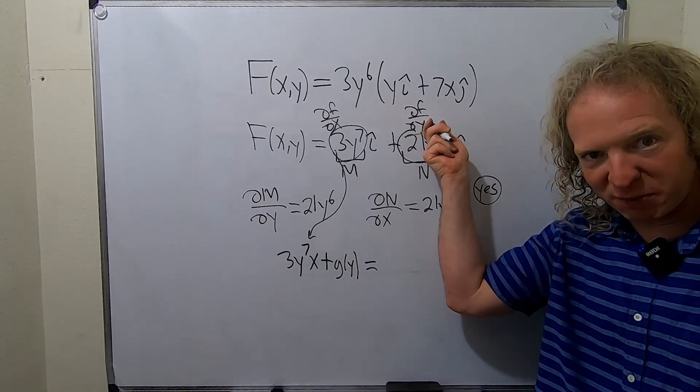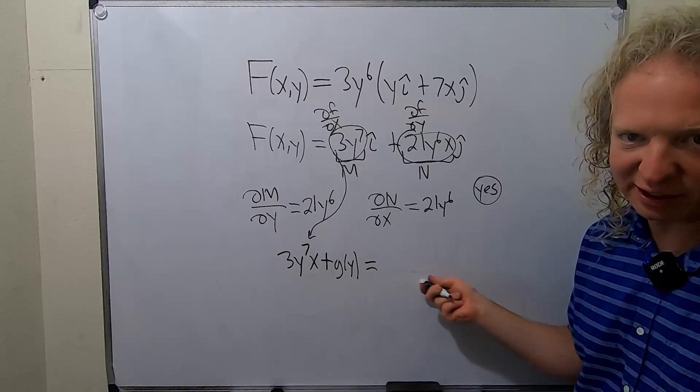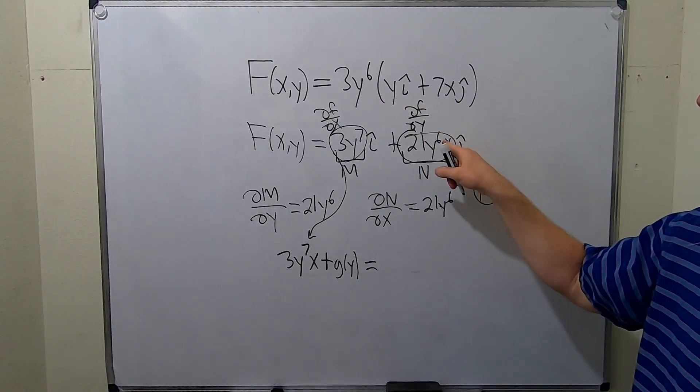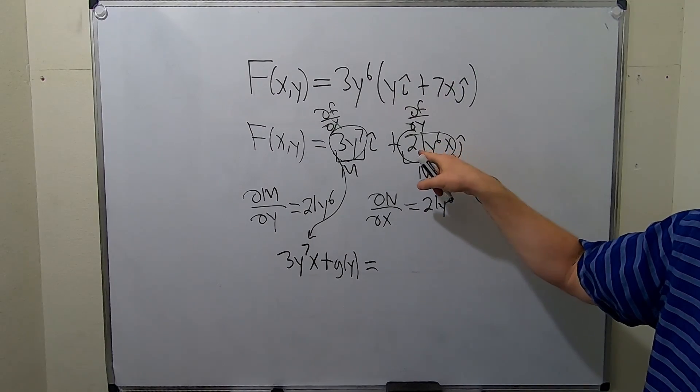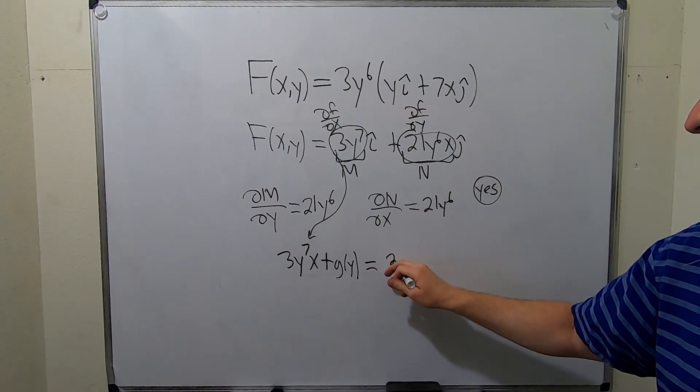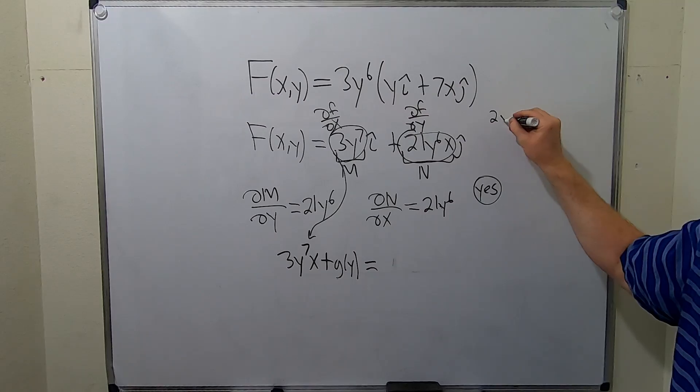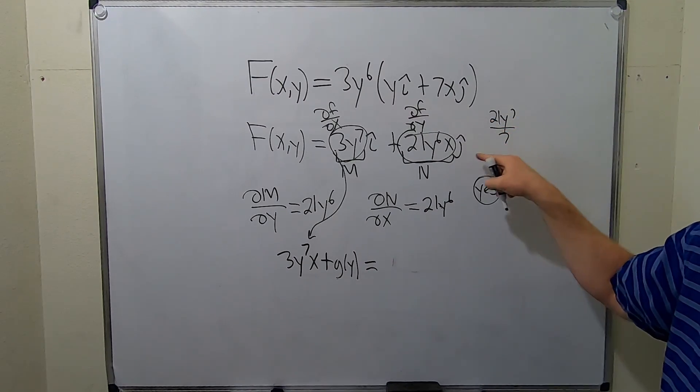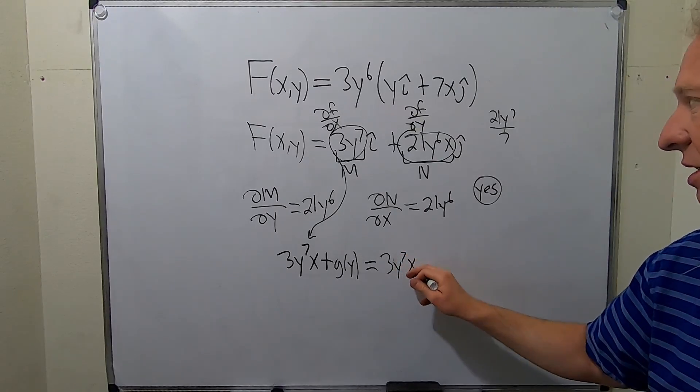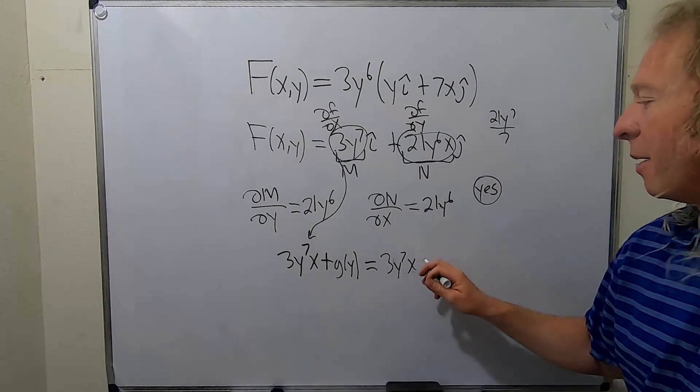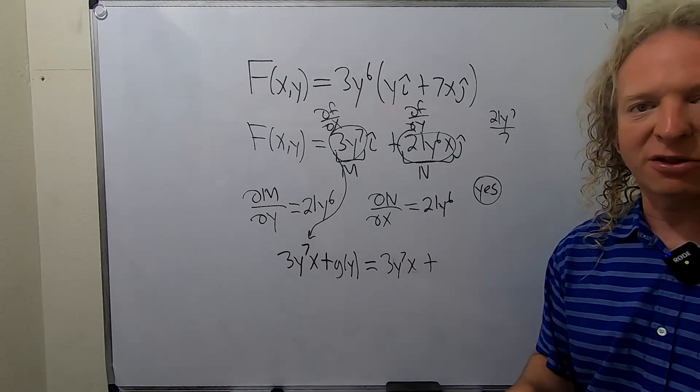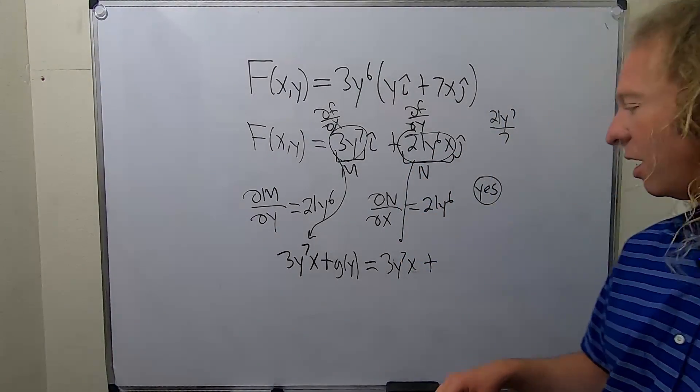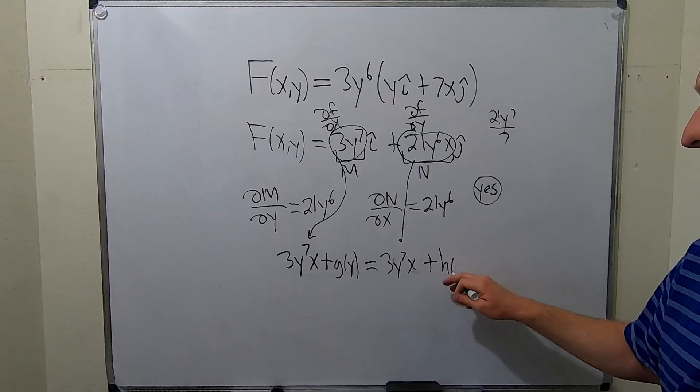But this is little f. So if we integrate this with respect to y, we're also going to get little f. So we'll integrate this with respect to y. Using the power rule, you're going to get 21y^7 over 7, which is 3y^7. So 3y^7 x—the x is a constant, so it hangs out—plus an unknown function of the other variable. So we integrated with respect to y, so we add an unknown function of x, h(x).